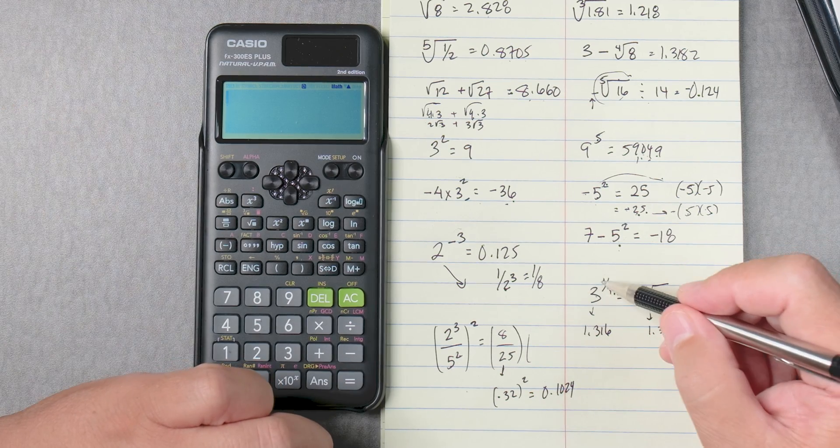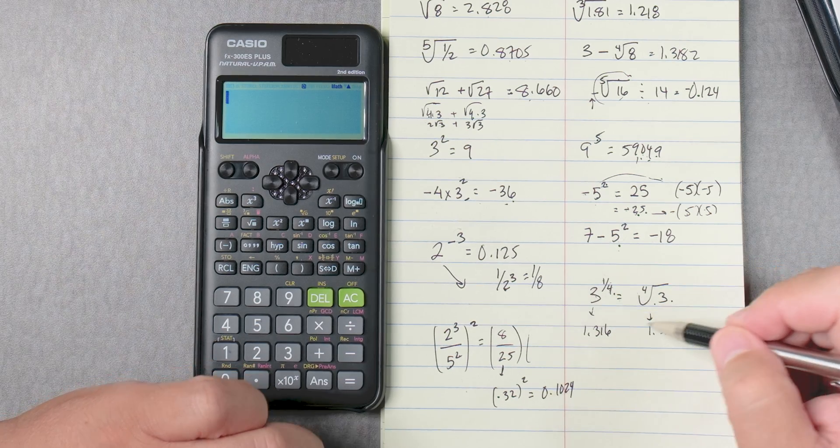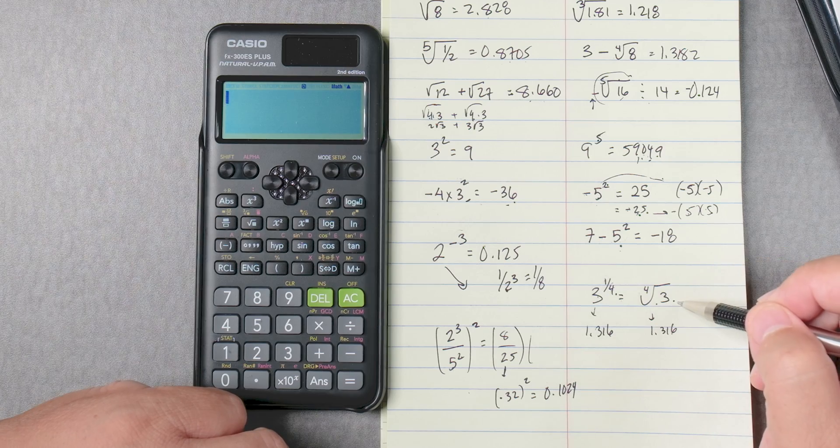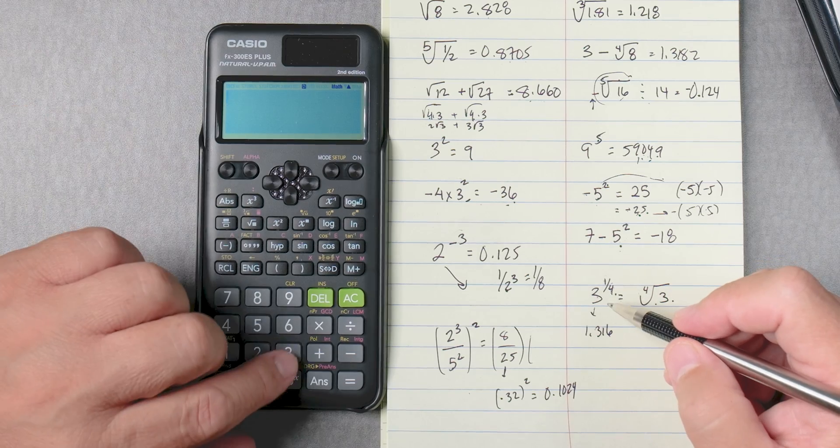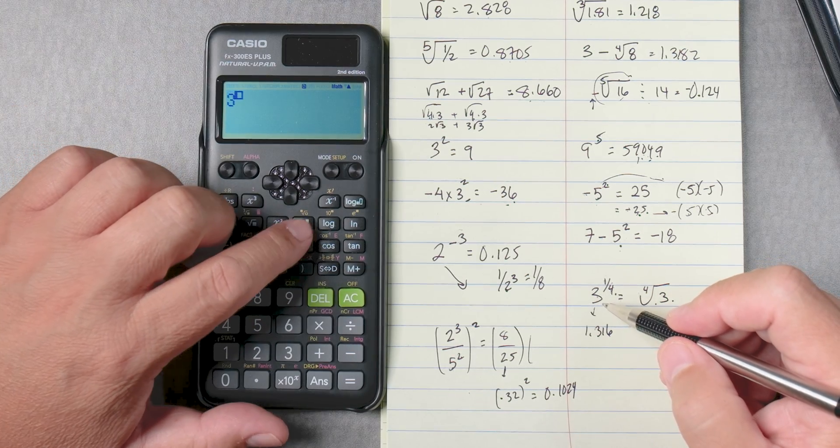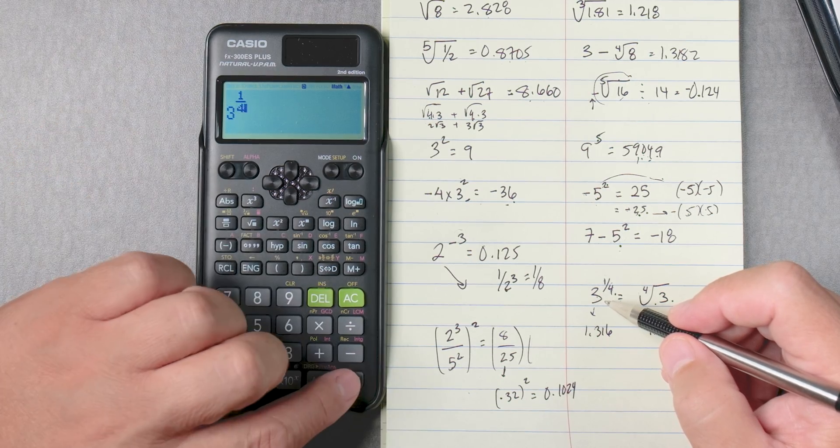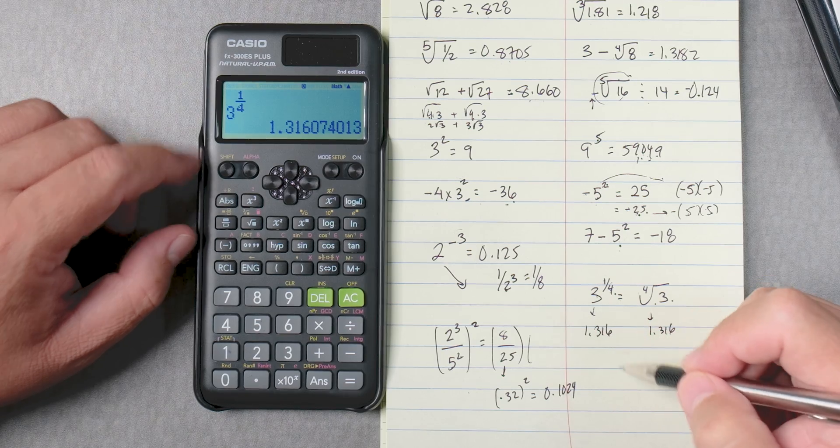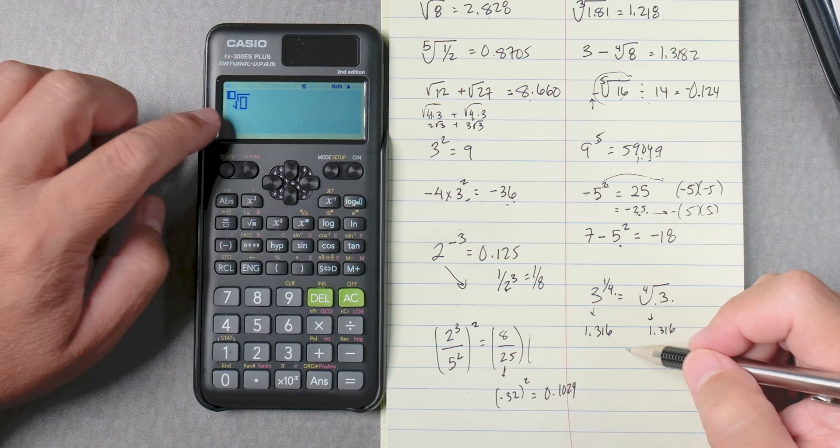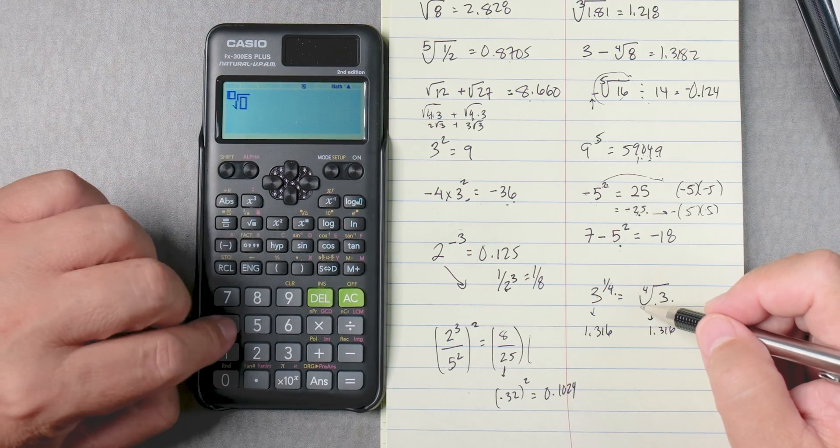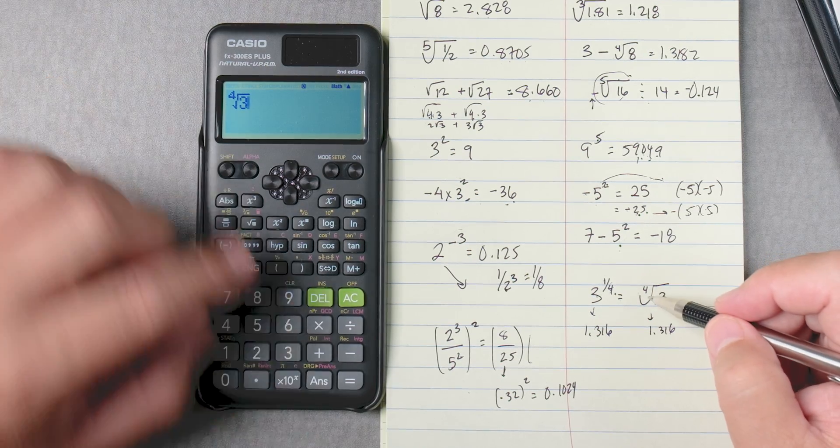Let's try this one. This problem says 3 to the 1/4 equals the 4th root of 3. These are equivalent. And this is why you study roots and powers at the same time, because they're interchangeable. So 3 to the 1/4. So we go 3, X box, and we can do a fraction there. 1, we go down 4 equals 1.316. Or we can say shift X box, which is the nth root. But this one, we're going to say 4th root of what? Move it over, 3, and then equals. Same answer.